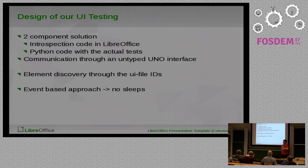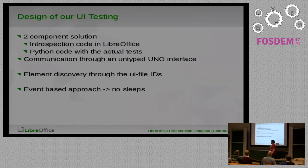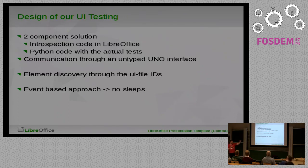We connect to that introspection code with Python through a UNO interface — a really simple interface, so writing the Python code does not require any new UNO knowledge. Element discovery — finding a UI element like a button in a dialog — happens through the IDs we have in UI files. The advantage of using IDs is that they should be stable and locally unique. If you have a dialog, the ID should be unique, and if you move a button to a different place in the same dialog, you should still get the same button.